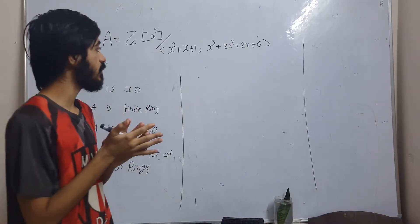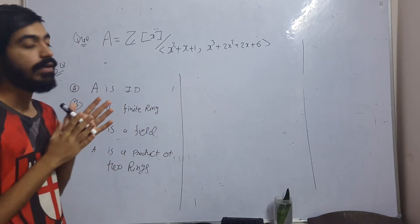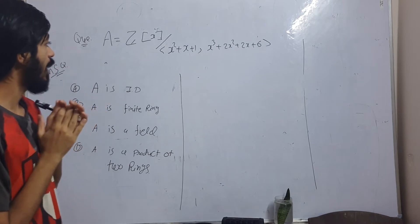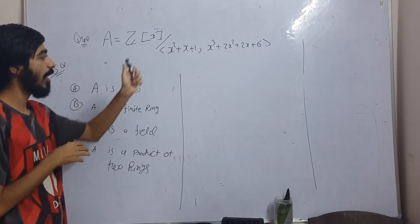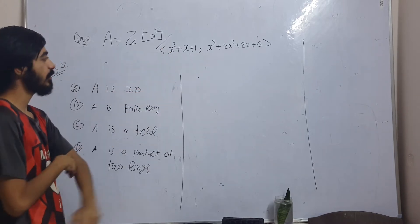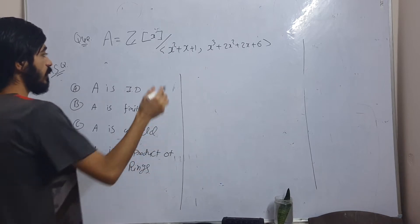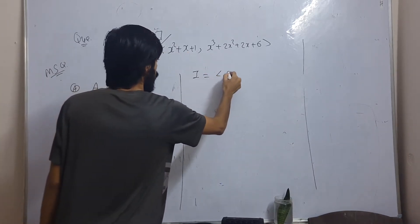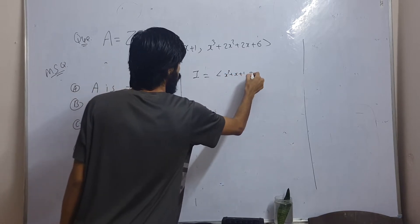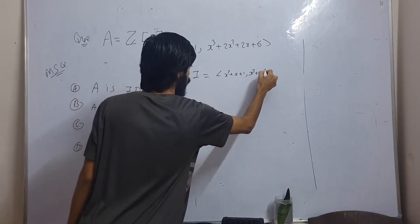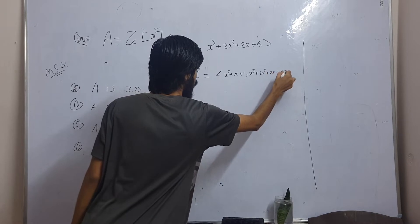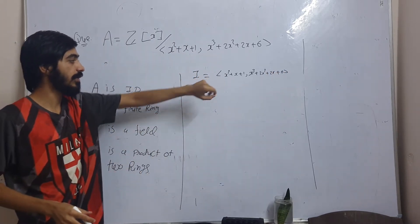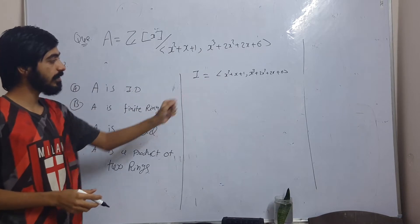Hi friends, this question was asked in CS and NET exam in September 2022. I'm going to show how you can attempt a question like this. Let I be the ideal generated by x² + x + 1 and x³ + 2x² + 2x + 6. We will first try to simplify this ideal.